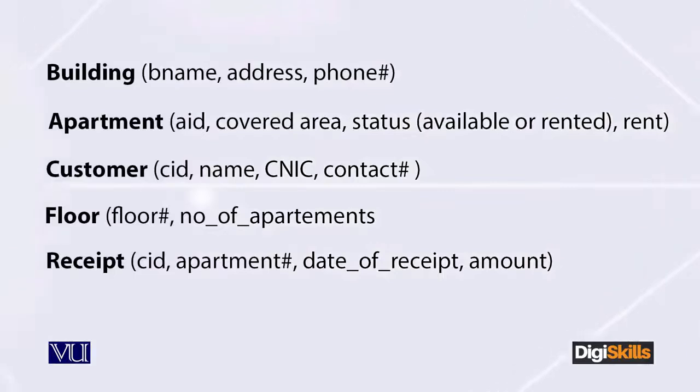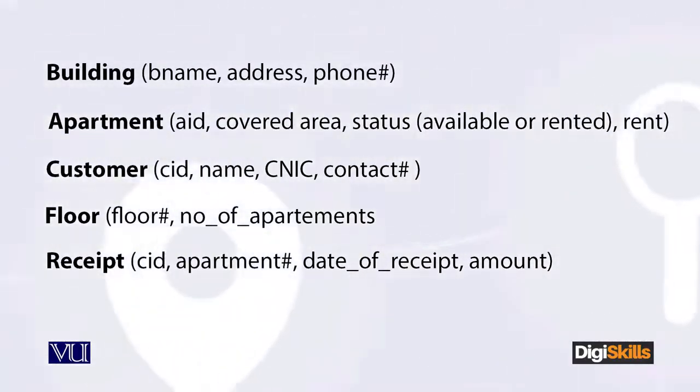Primary key ke andar ek column bhi ho sakti hai — yarni sirf aapki ID bhi ho sakti hai, student ID bhi ho sakti hai, ya customer ID jo humne identify ki thi. Aur ek se zyada column bhi milke ek primary key ka part ban sakti hai. Table ke andar ek primary key hi hogi — yeh aap ko yaad rakhna hai. Ek se zyada primary key nahi ho sakti. Primary key ke andar uske jo columns hain woh ek se zyada ho sakti hain, lekin primary key table mein ek hi hogi.